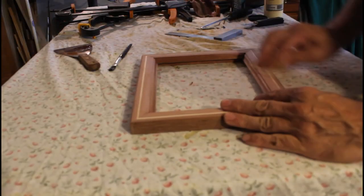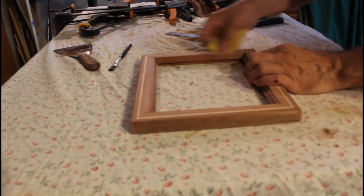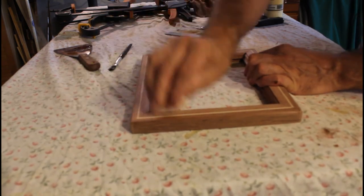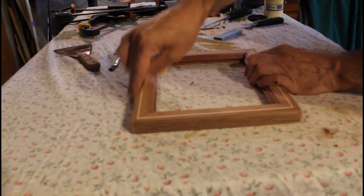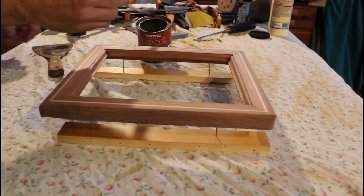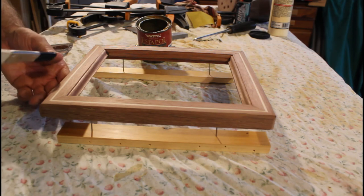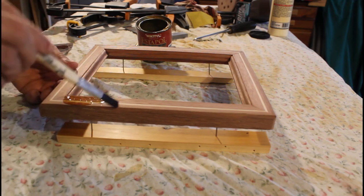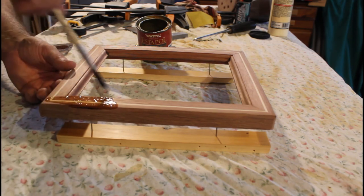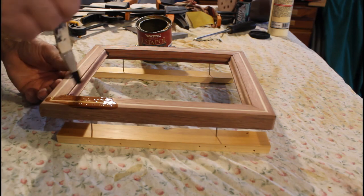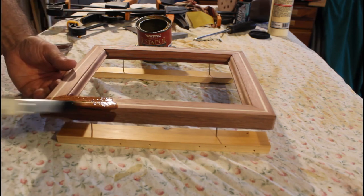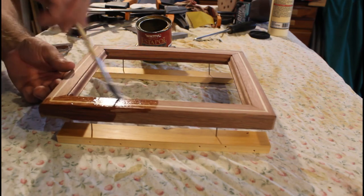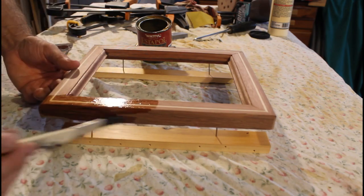Once the glue had thoroughly dried, I went over the whole frame with some 180 grit sandpaper. Now it was time to apply the final finish, which was a satin lacquer or varnish. You can really see here how the inlay contrasts with the darker red gum. I ended up putting two coats.